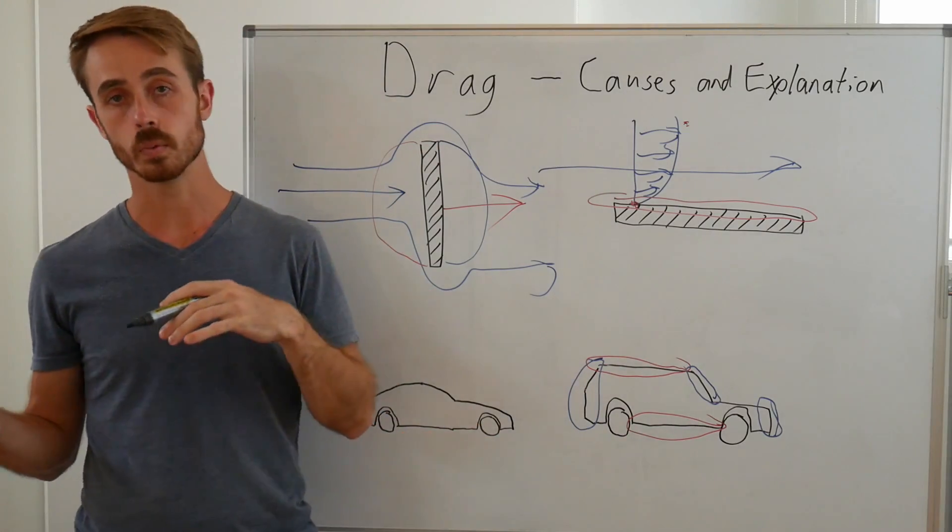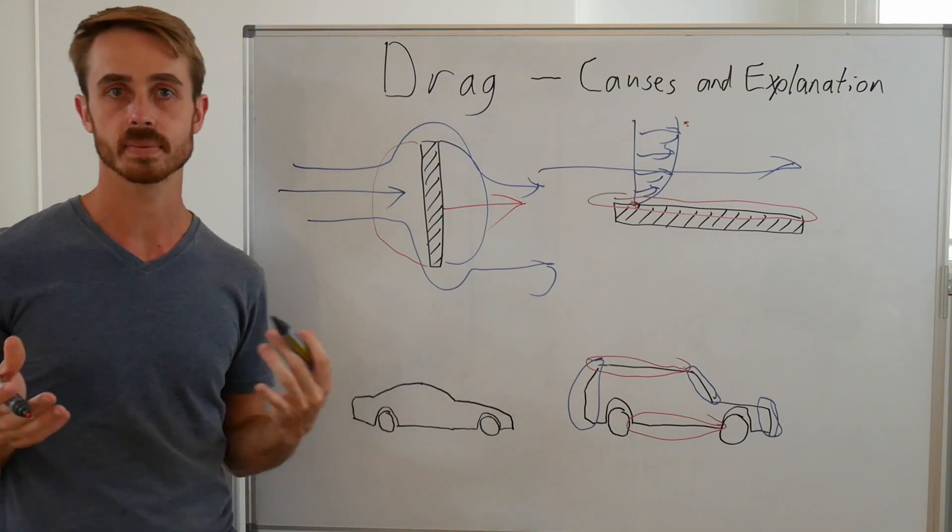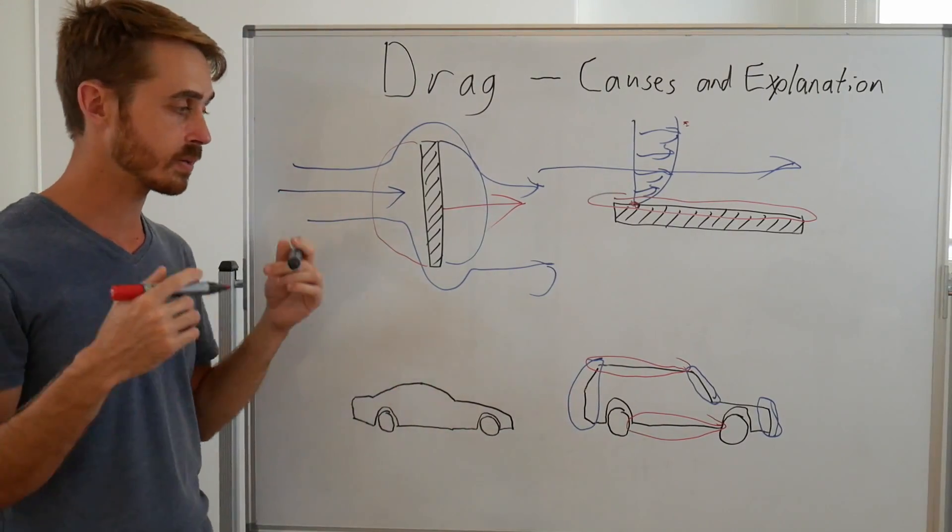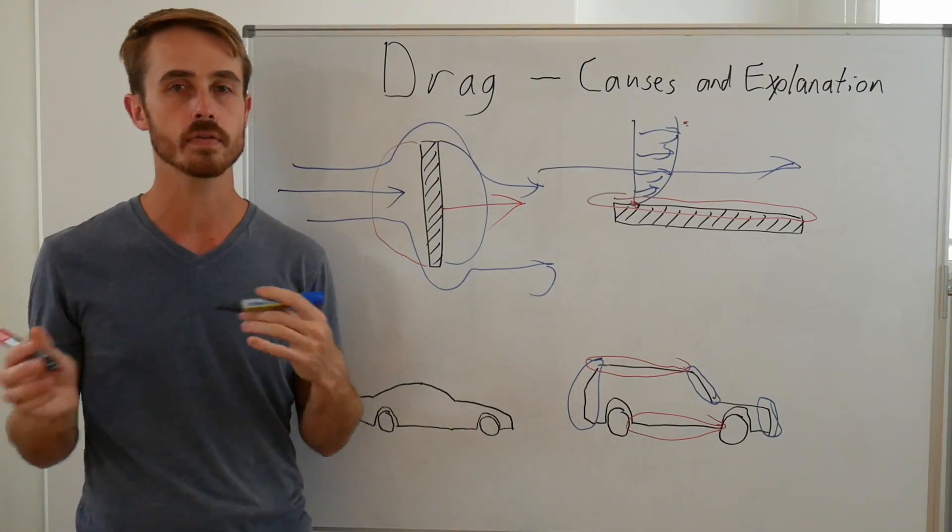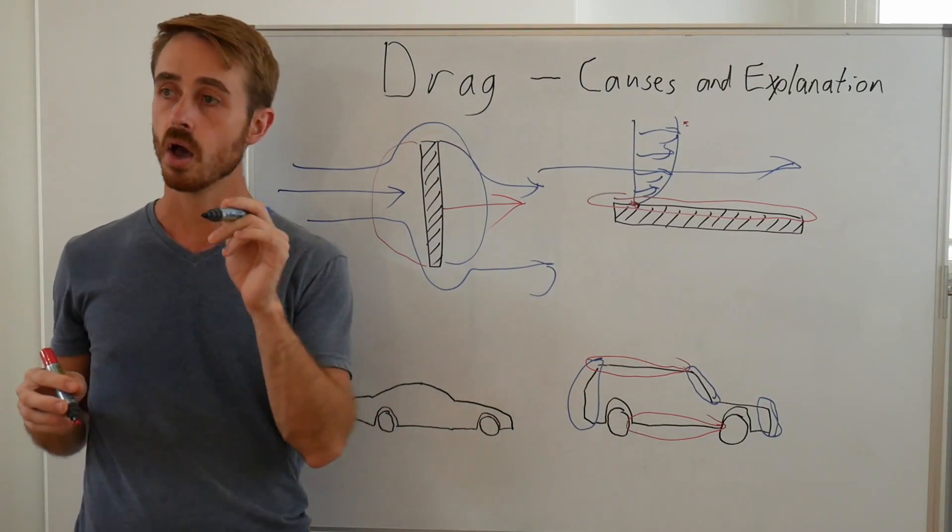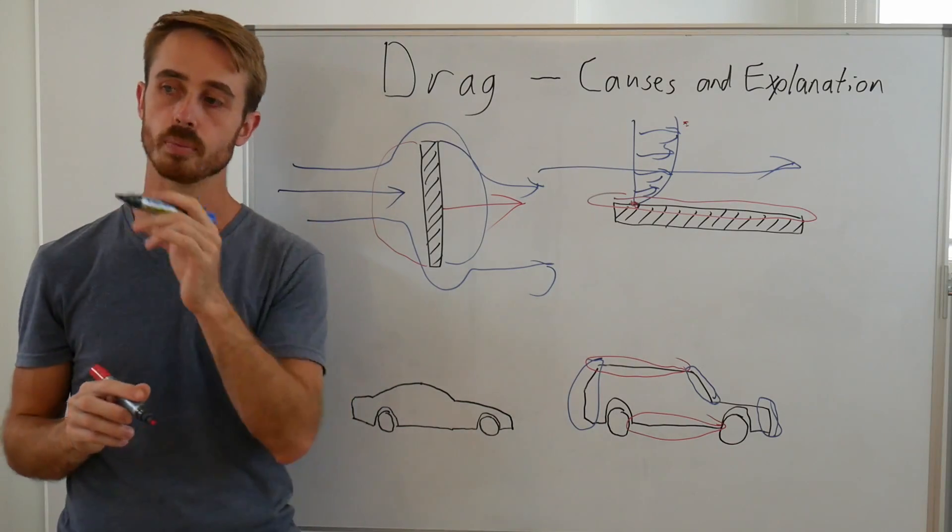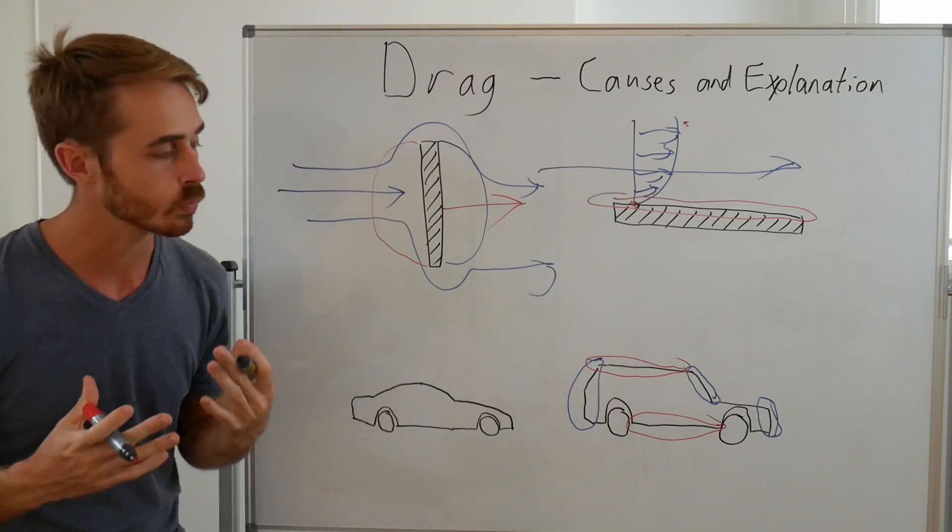Now when we test our model in a wind tunnel or we test in CFD or something like that, we get a coefficient of drag, CD. Now the CD value people often read a little bit too much into it. They say like, oh this car's got a CD of 0.3 and this one's got a CD of 0.4, so therefore the 0.3 is more efficient. Not really true.